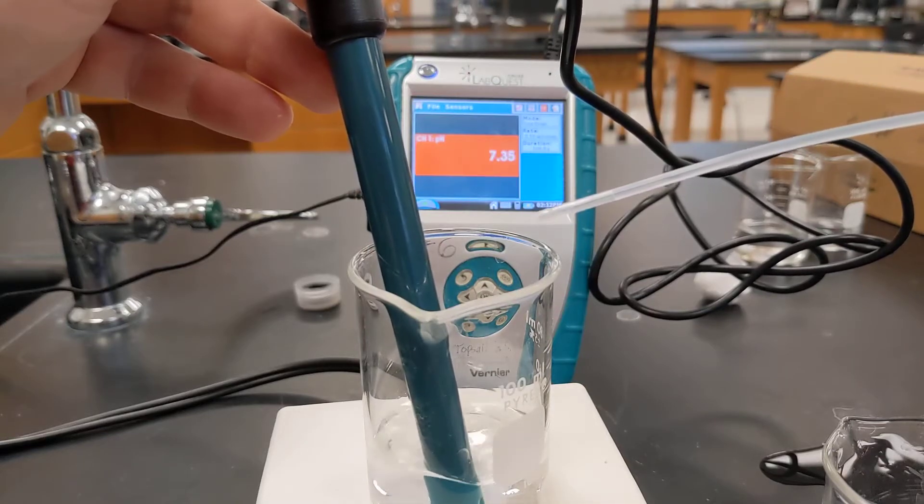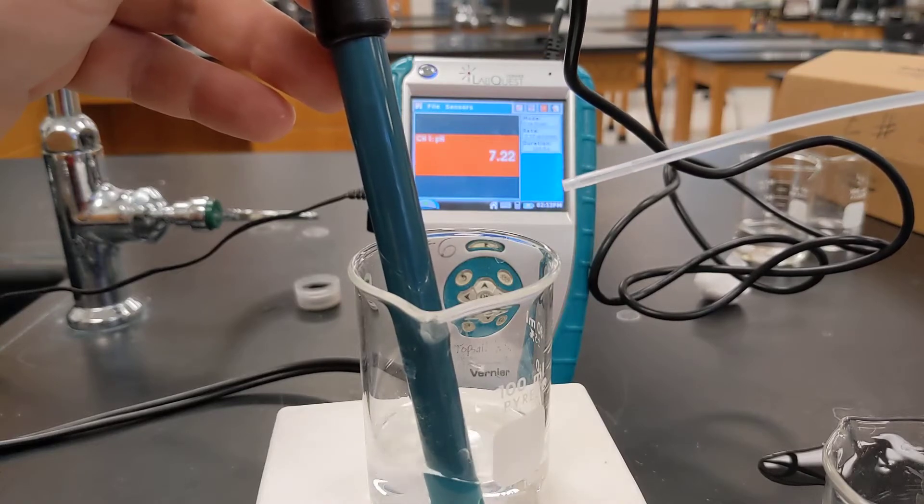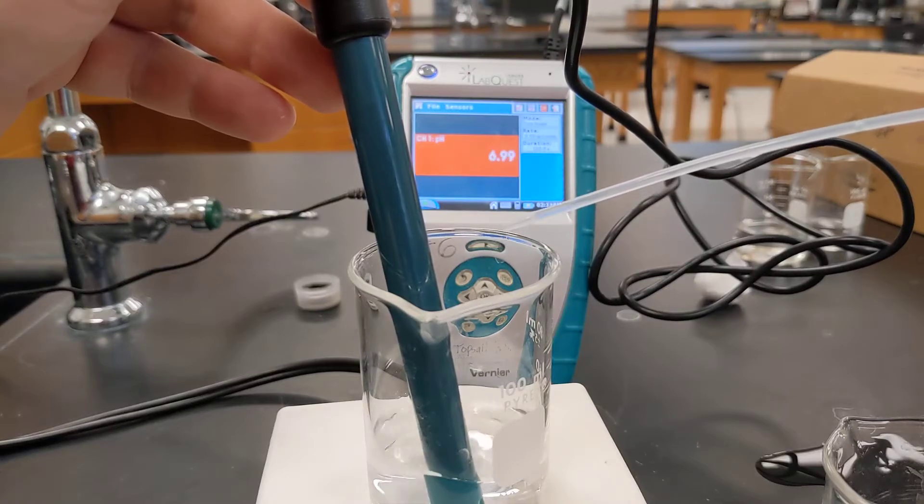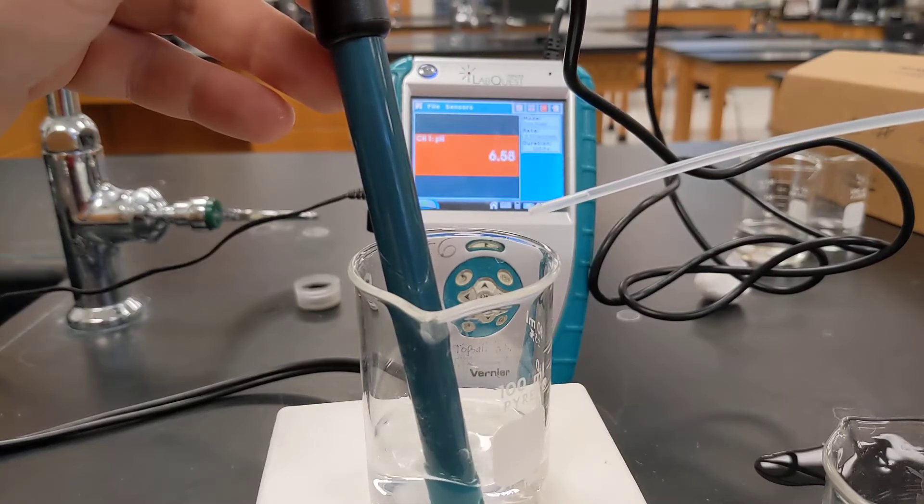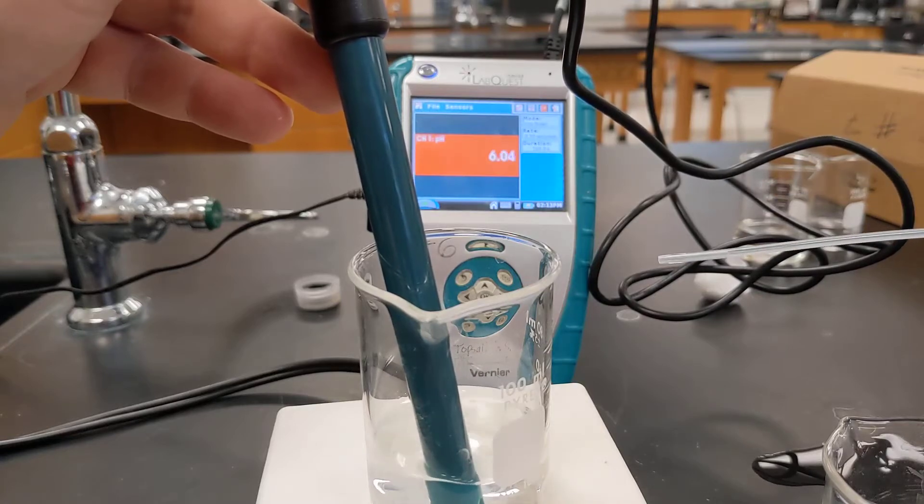Let's see, the pH is starting to go down. Let's add one more drop and get that in there. With two drops you can see the pH is really starting to drop now.